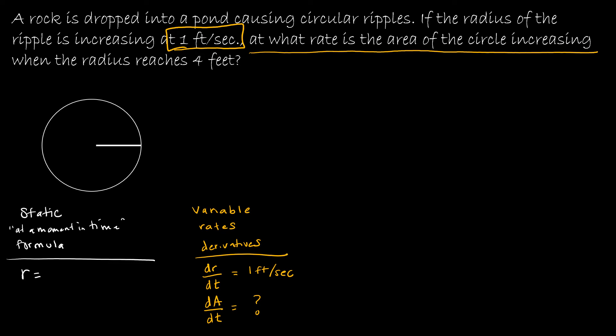And then it says when the radius reaches four feet. So this is at a moment in time when the radius reaches four feet, so that tells me this is four feet. So now I'm only missing one thing. Anything that's on the variable side has to correspond to something on the static side and vice versa. So what am I missing? I'm missing area.